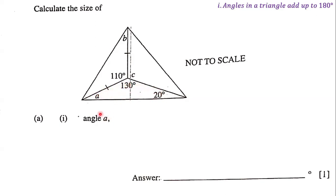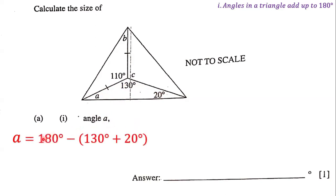So if we want to calculate the size of angle A, the first thing we're going to do is add 130 and 20, and subtract that sum from 180 degrees. So A is going to be equal to 180 degrees minus 130 plus 20. When we add 130 plus 20, we get 150. So A is going to be equal to 180 degrees minus 150 degrees.